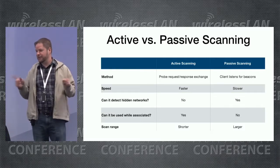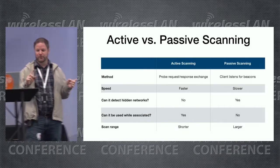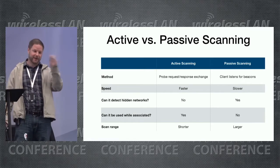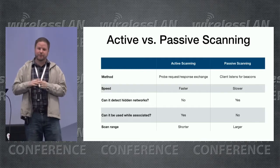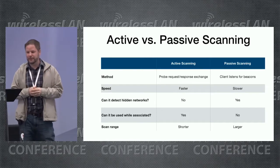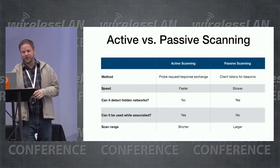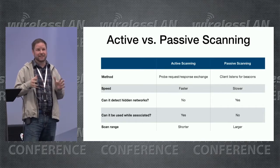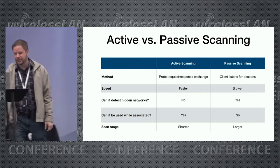Here's a table summarizing active vs. passive scanning. Active uses probe request/response — specifically designed to be faster — while passive listens for beacons. With passive you have to wait a bit longer, so there's a difference: in Wi-Fi Explorer Pro, an active scan takes about three to four seconds, while a passive scan takes seven to eight seconds to cover all the interface's supported channels.